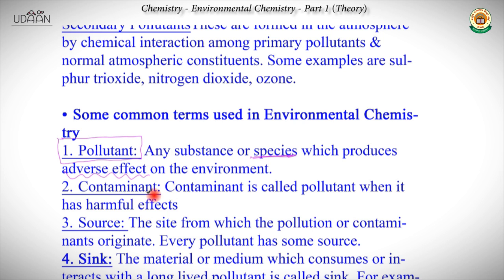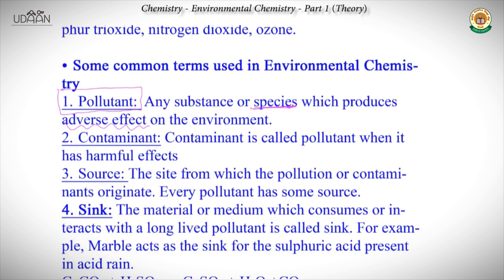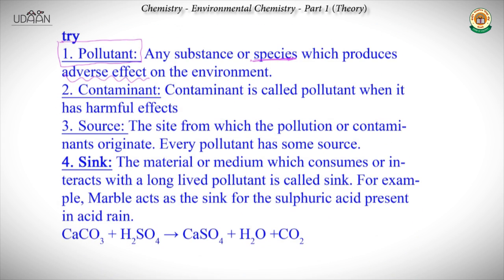Next is contaminant. A contaminant is a substance which gets accumulated in the environment, and it is called a pollutant when it has harmful effects on the environment. Next is source. Source is basically the place from where pollution is being generated.